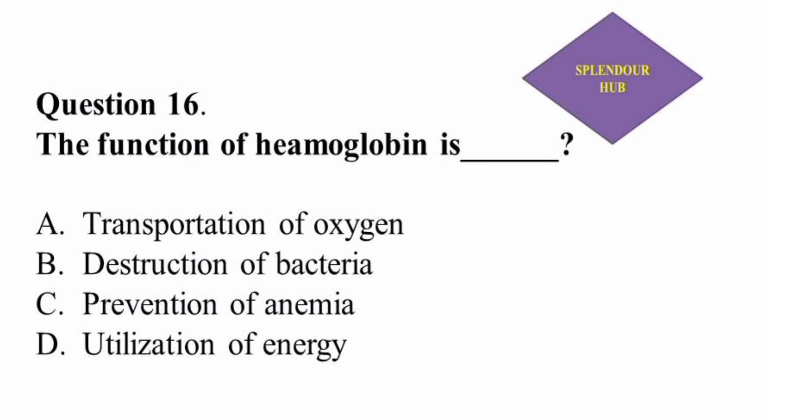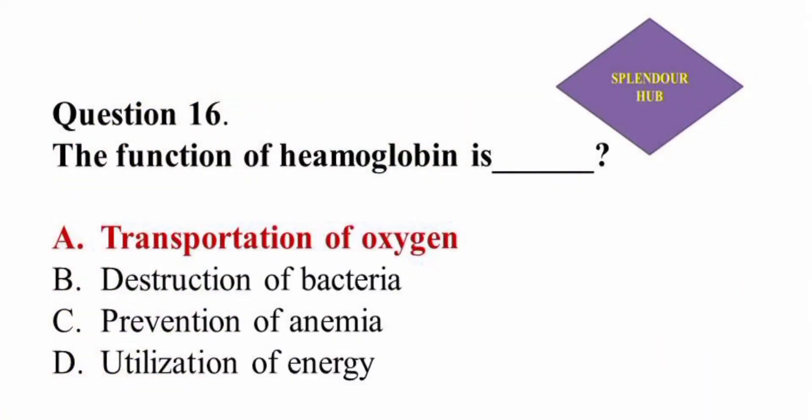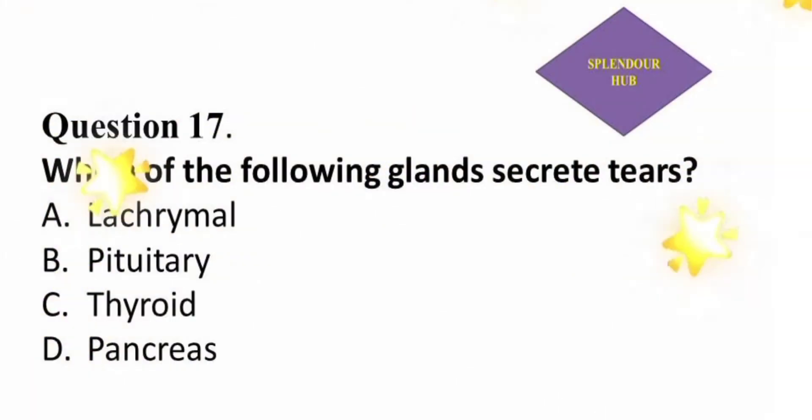Question 16: The function of hemoglobin is — option A: transportation of oxygen, option B: destruction of bacteria, option C: prevention of anemia, option D: utilization of energy. Answer: The function of hemoglobin is transportation of oxygen.